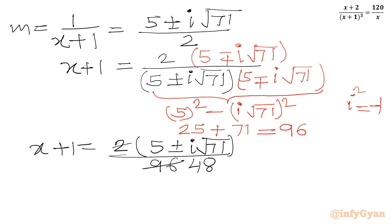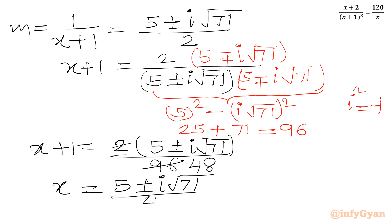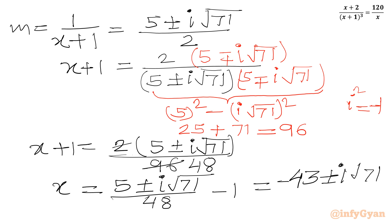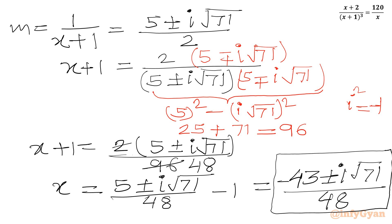We can simplify to (5 ∓ i√71) / 48. Now subtract 1 from both sides to get x. We will get two complex solutions: x = (5 ± i√71) / 48 − 1 = (−43 ± i√71) / 48. So we have two complex solutions and one real solution, x = −6/5.